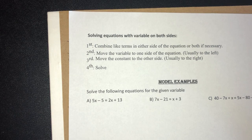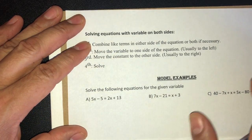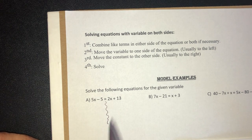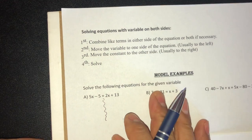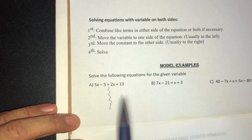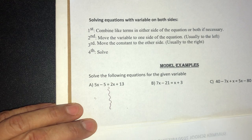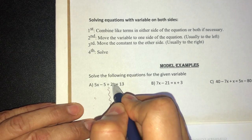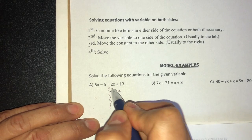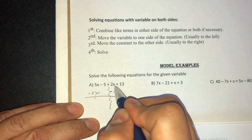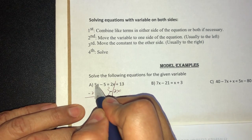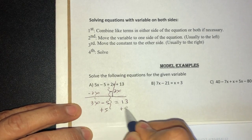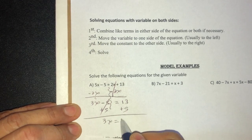I always want my variable to end on the left and the constant on the right — especially because when we do inequalities, you always want the variable on the left side. Let's do one step at a time first. The variable goes first — that becomes negative. So 5 minus 2 is 3x, bring down the negative 5 equals 13. Two-step equation: plus 5 plus 5, cancel out, now 3x equals 18. Divide by 3, x equals 6.